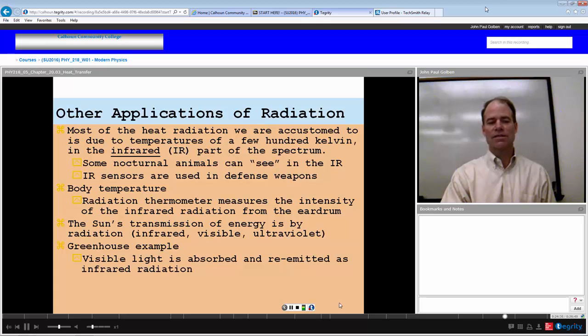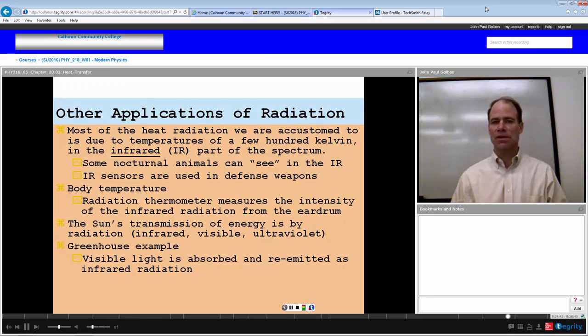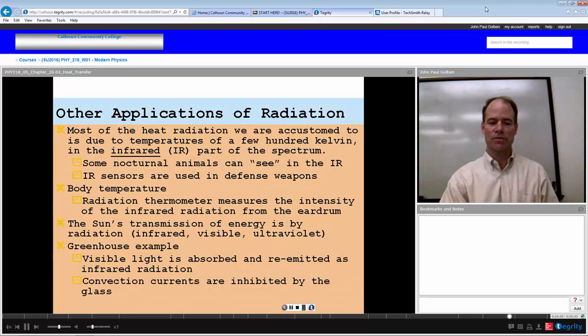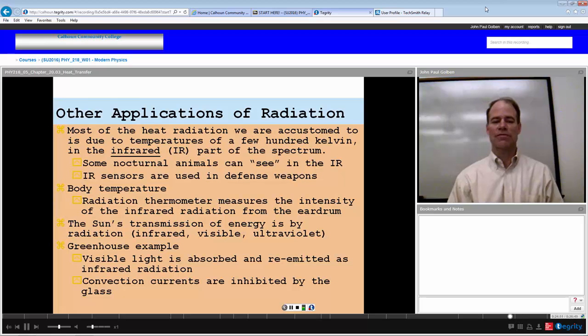A greenhouse example: visible light is absorbed into a greenhouse easily through the window pane and then it can be re-emitted as infrared radiation which is less energetic and possibly cannot make it out through the window. So you have your convection currents of the heated air not being able to escape and hence maintaining a hotter temperature inside the greenhouse.